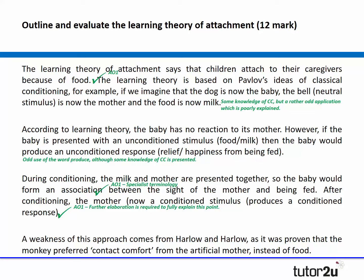It's not a perfect explanation by any means. In terms of evaluation, they go on to say: 'A weakness of this approach comes from Harlow and Harlow, as it was proven' — I hate the use of the word 'proven', that's a lack of specialist terminology — 'that the monkey preferred contact comfort from the artificial mother instead of the food.' And that's the entire answer. I should note that these are two genuine answers from students I've actually taught — these aren't ones I've made up, these are real answers.